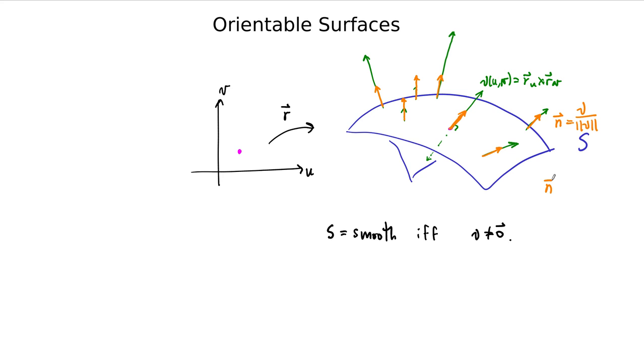So all these vectors, these orange ones I've drawn, these we call lowercase n with a hat, and these are just equal to our normal vector nu divided by the length of the vector nu. And now, these vectors, these all have length one, so the length of n by definition, by construction, is equal to one for our smooth surface, and the only thing that changes for these vectors is the direction of the vector.